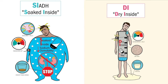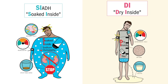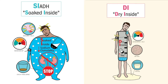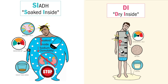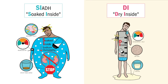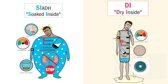Let's wrap up SIADH versus DI — Syndrome of Inappropriate Antidiuretic Hormone versus Diabetes Insipidus. In SIADH, we stop urinating and we get SI: soaked inside, with low liquidy labs. In DI, we diurese or basically drain a lot of fluid, so we get DI: dry inside, with high and dry lab values.